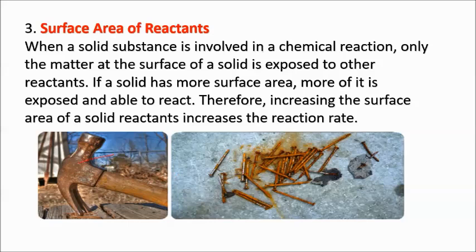Which rusts faster — the iron hammer or the iron nail? The iron nail rusts faster because more of its surface is exposed. Increasing the surface area of a solid reactant increases the reaction rate. Smaller pieces of solid reactants react more easily and quickly.